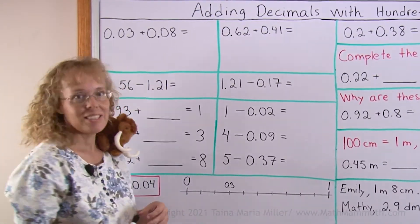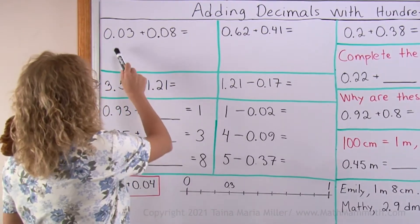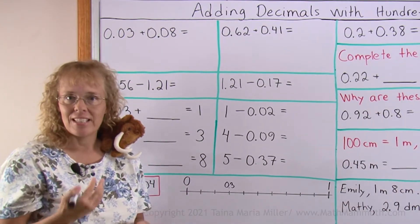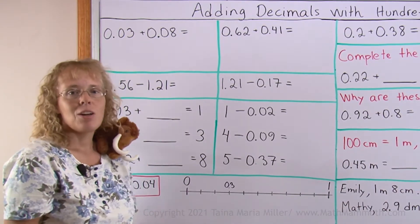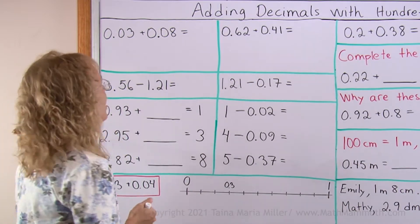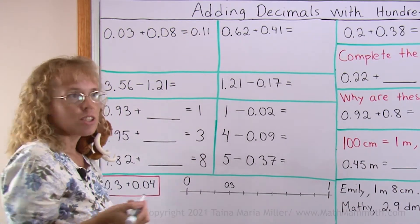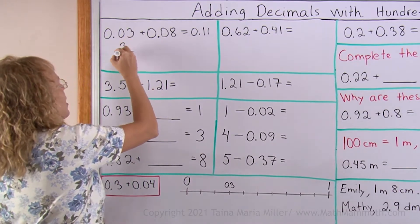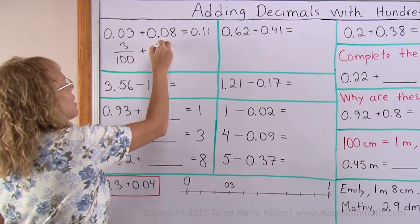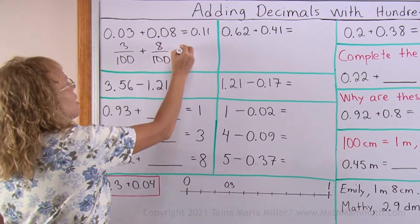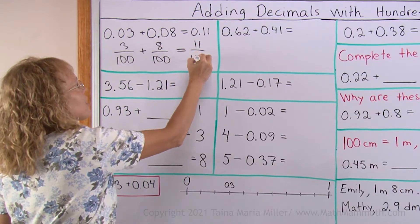Now, first of all, I have two easy problems here. Here I have three hundredths plus eight hundredths, now that is easy, all we get is eleven hundredths, right? Let me write it with fractions too, three hundredths plus eight hundredths equals eleven hundredths.